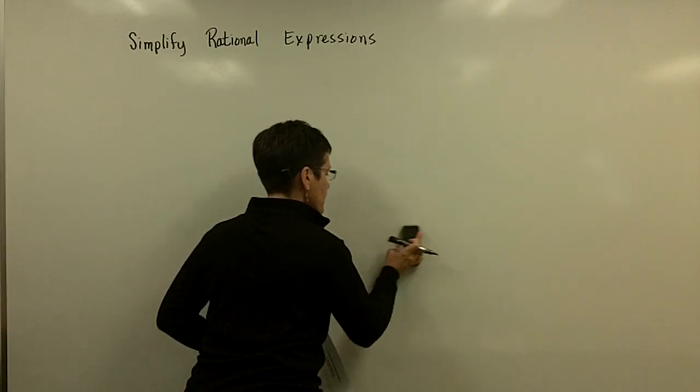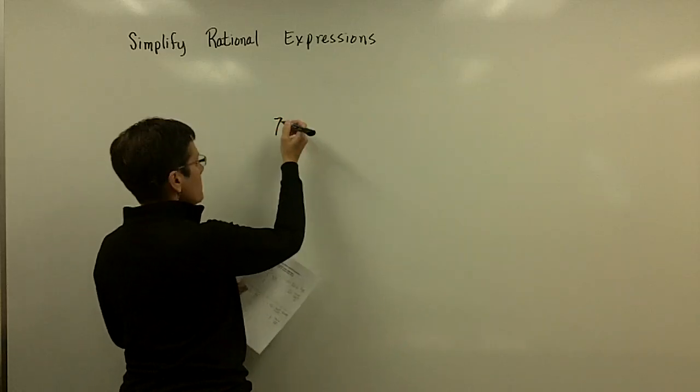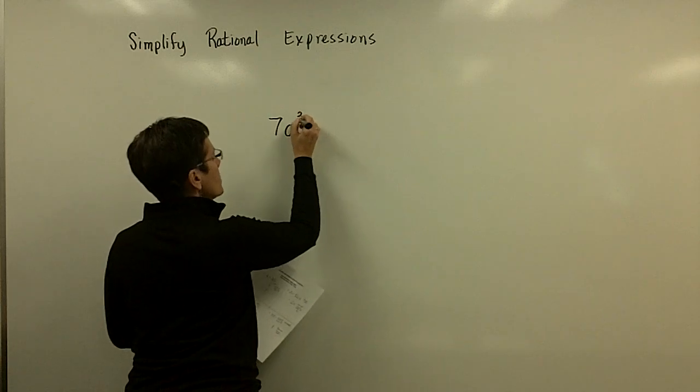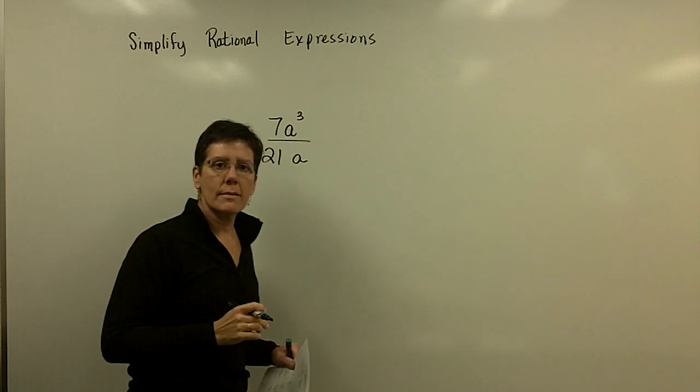So let's go ahead and look at an algebraic fraction that just has monomials. So I have 7a cubed over 21a, and I want to simplify that.